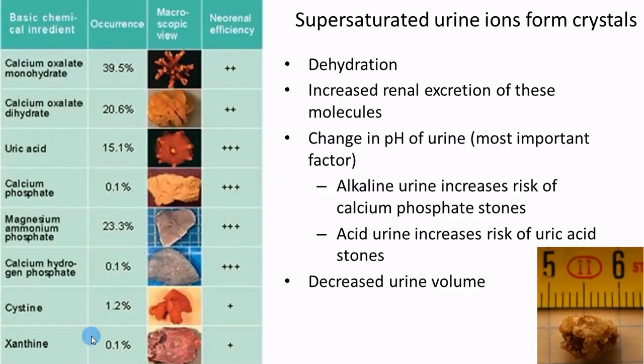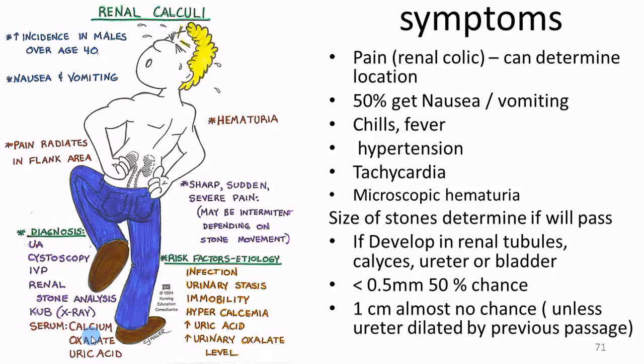With kidney stones blocking flow, you see decreased urine volume. Patients feel like they have to go but can't. Symptoms include renal colic pain — location determined by where the stone is — nausea and vomiting in about half of patients, chills and fever, and hypertension from inability to clear fluids. If a stone is less than half a millimeter, there's a 50% chance of passing it. Over a centimeter, surgery is required.